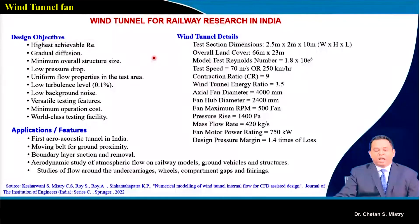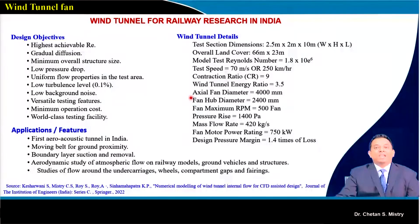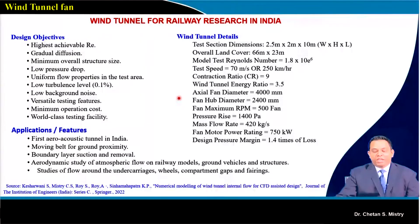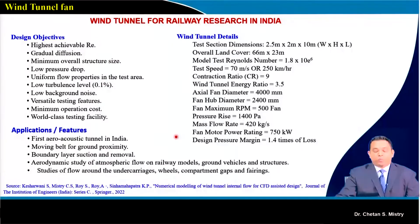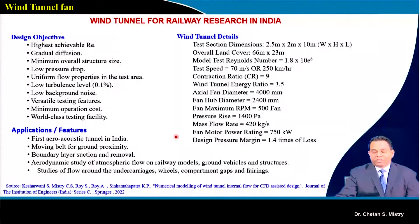The tunnel dimensions are: test section 2.5 m × 2 m × 10 m, overall length 66 m × 23 m, Reynolds number 1.8 × 10^6, test speed 250 km/h (maximum speed of future trains), contraction ratio 9, wind tunnel energy ratio 3.5, axial fan diameter 4000 mm, fan hub diameter 2400 mm, maximum RPM 500, pressure rise 1400 Pascal, mass flow rate 420 kg/s, motor power rating 750 kW, and design pressure gain 1.4 times the loss.